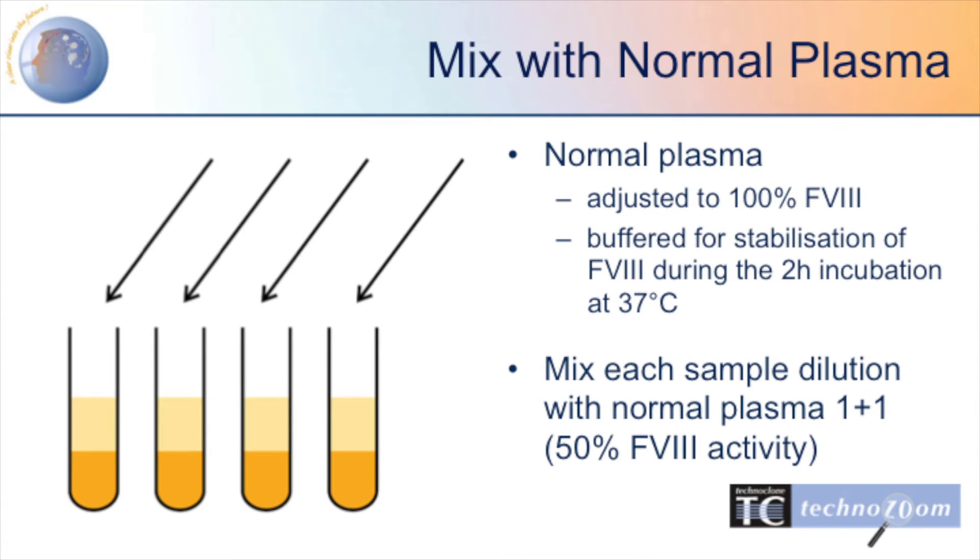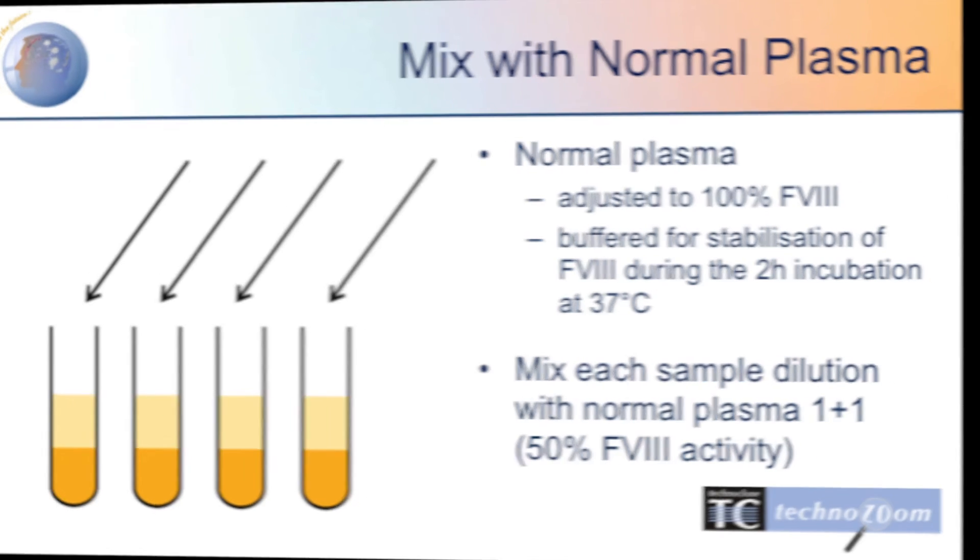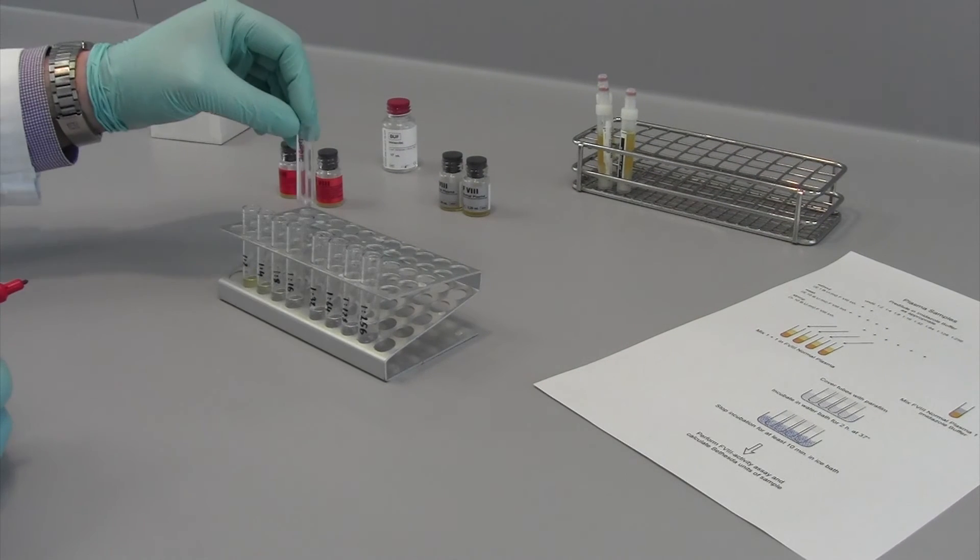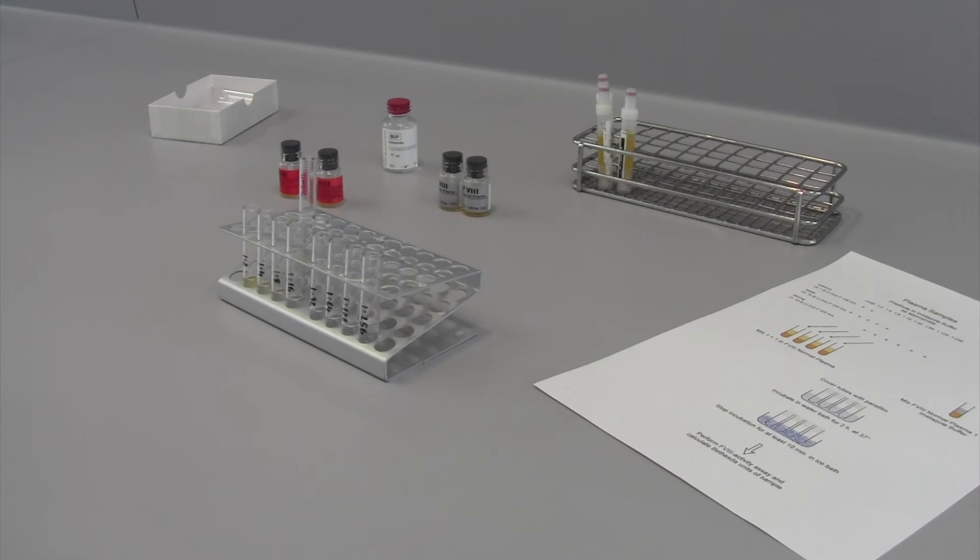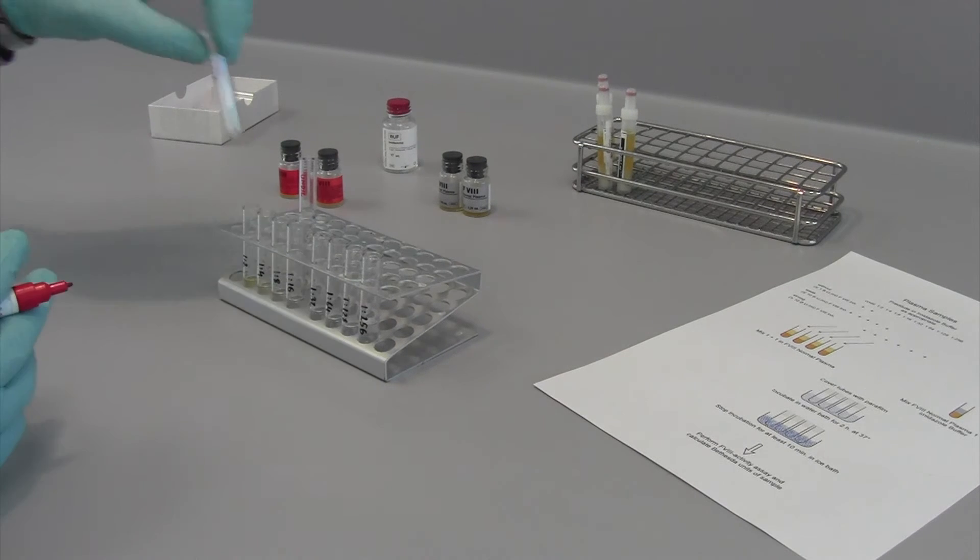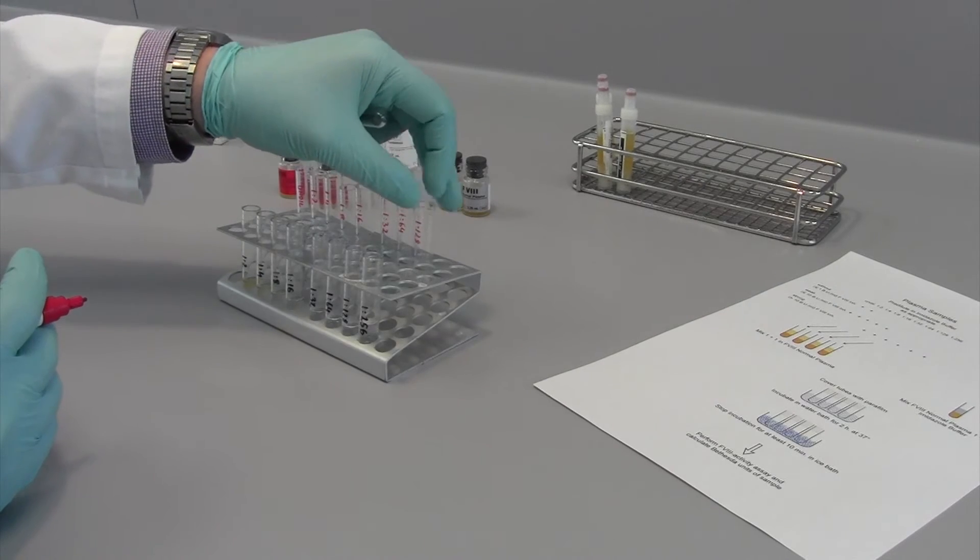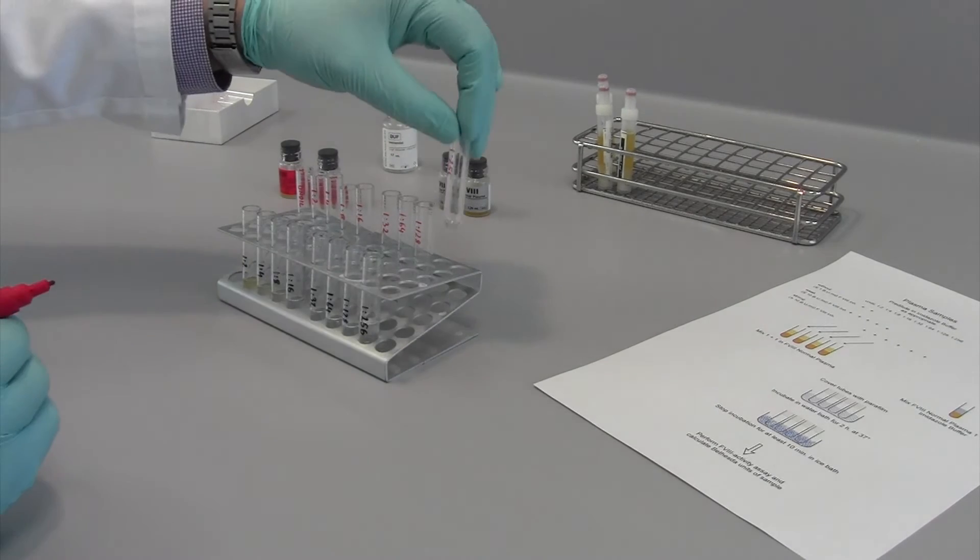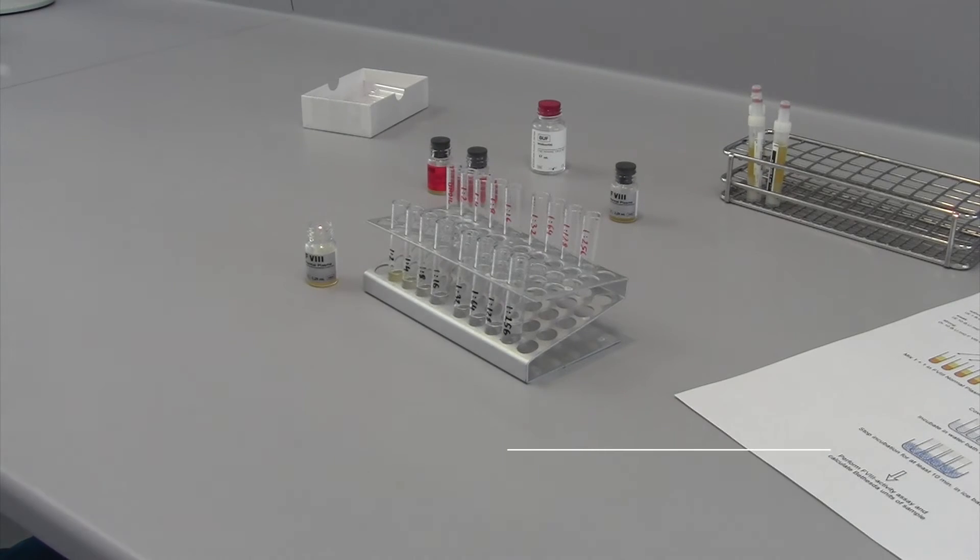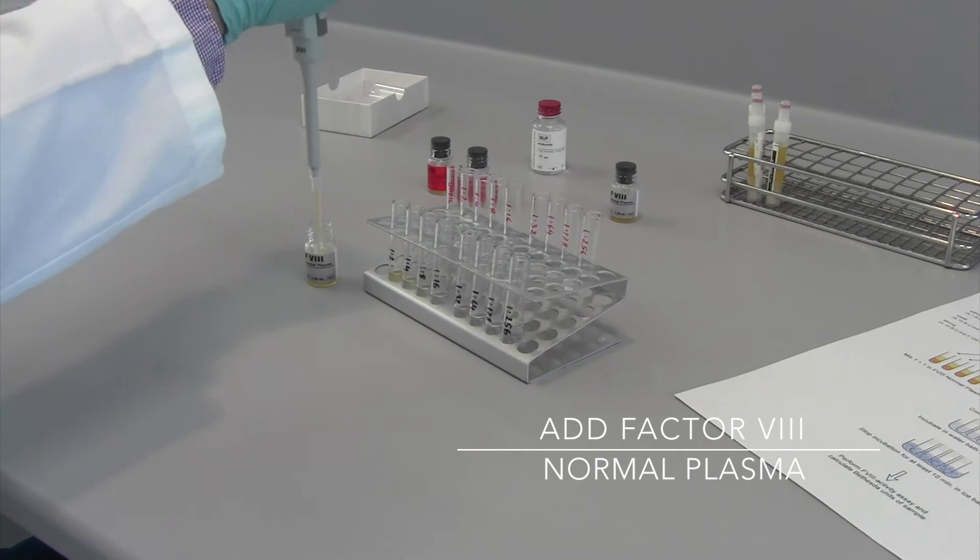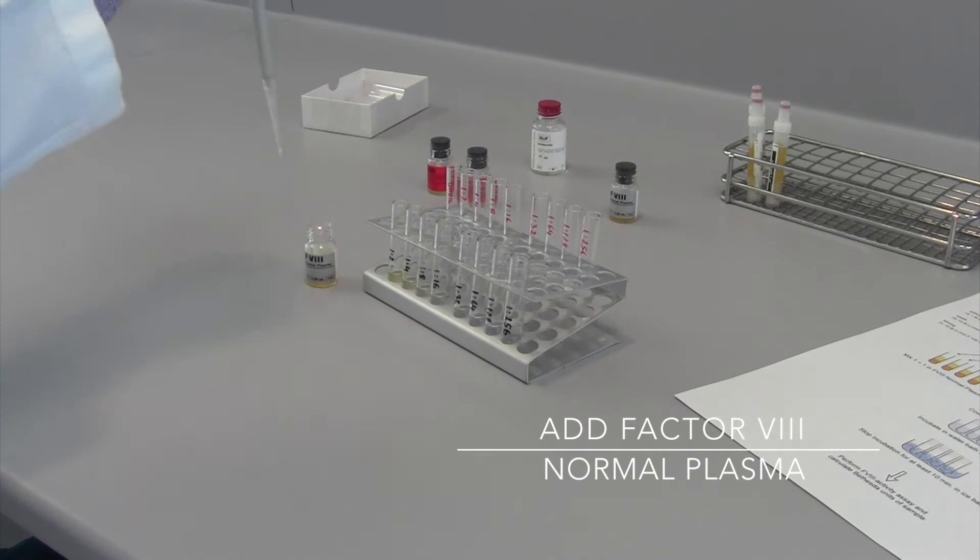We proceed with preparing the mixture of Factor VIII normal plasma. Once again, it is important to pre-label the tubes accordingly. Then, add appropriate volumes of Factor VIII normal plasma, for example 100 microliters per tube.